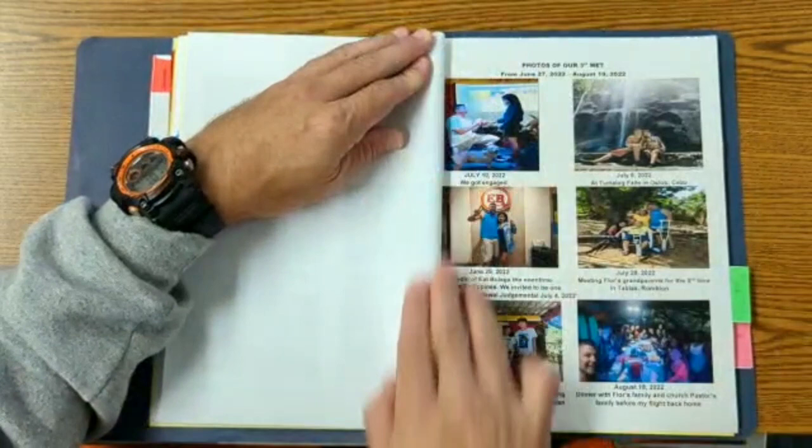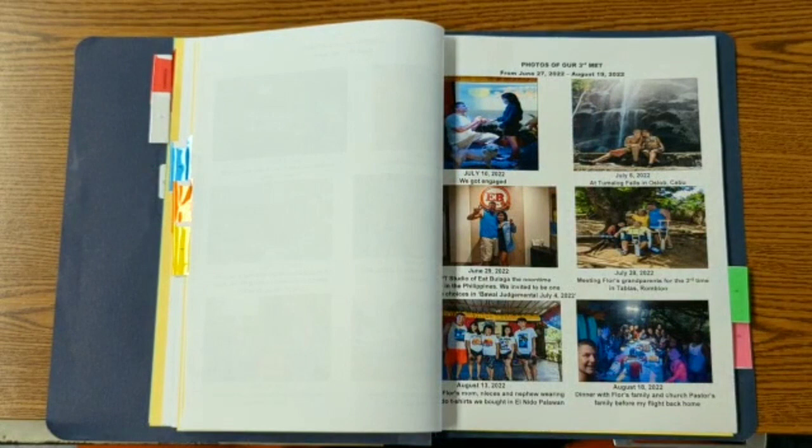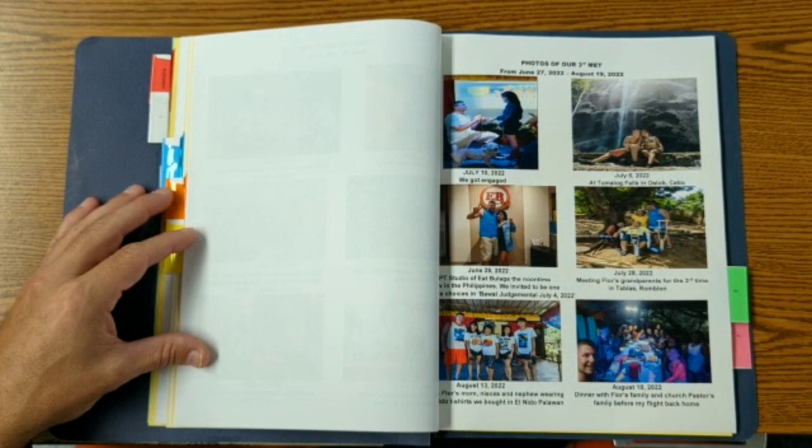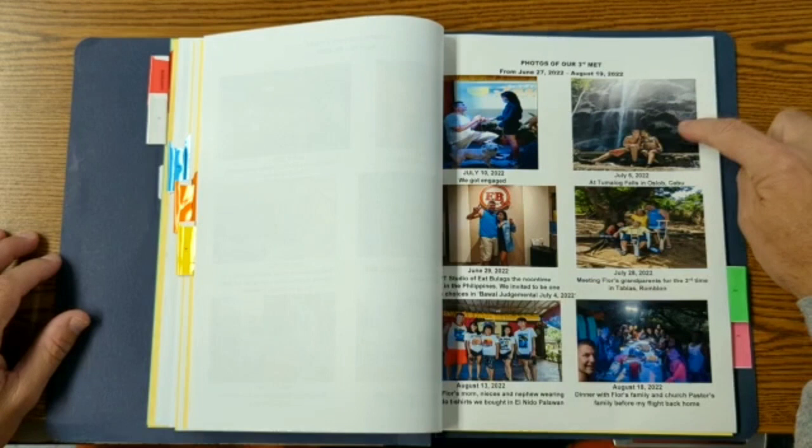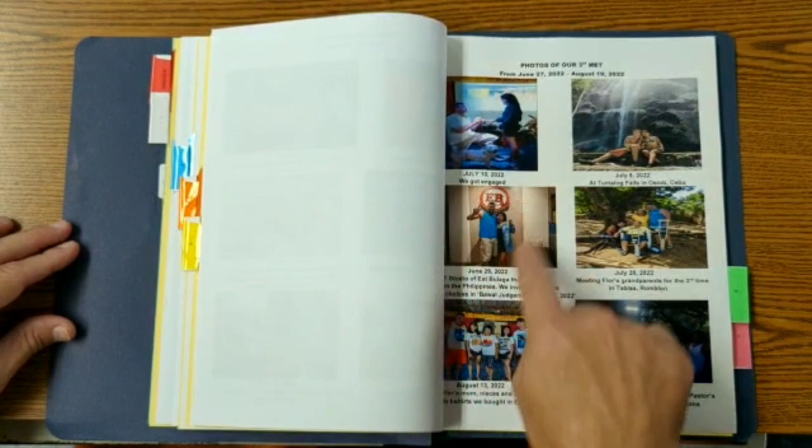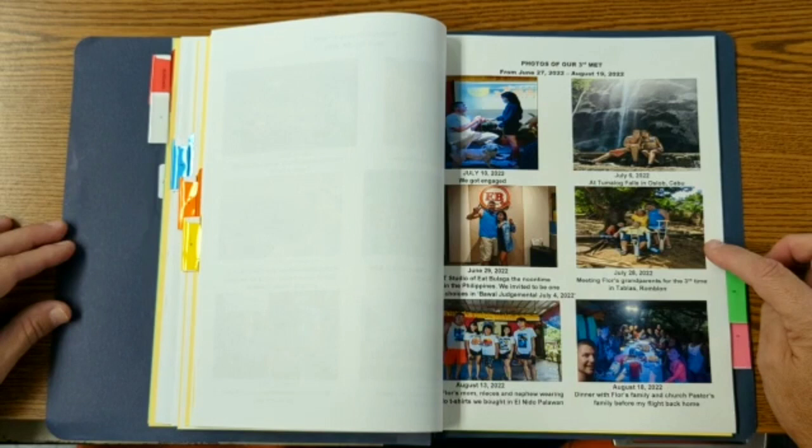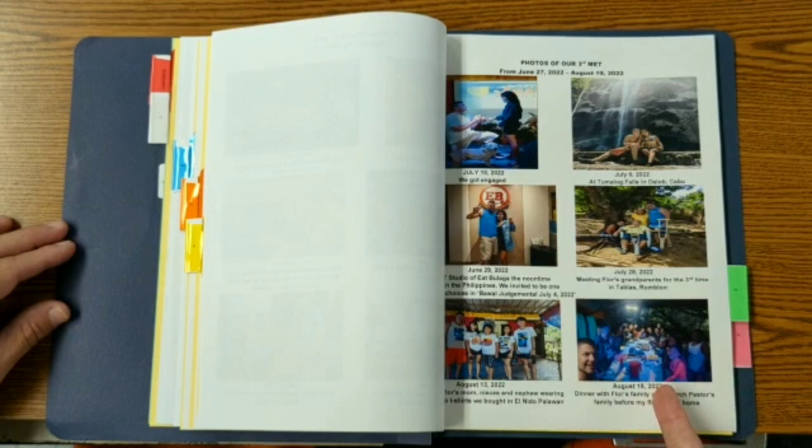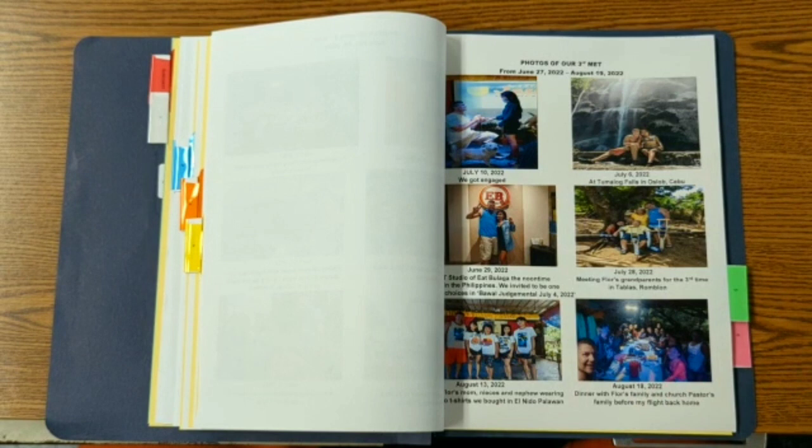All right, and then here's our third time meeting. So that was June 27th through August 19th, so I got to stay a long time. And once again, there's our proposal, there's a photo from it, July 10th, with Cookie's approval. But here's some of our trips. Tamala Falls, that was the most beautiful waterfall I've ever seen in my life down in Oslo. This is when we got to be on a TV show. Seeing our grandparents once again, photos with her nieces and nephew and also her mom, Nanay. And then dinner that we all got to share together with her pastor's family and all her family. So that was on August 18th.